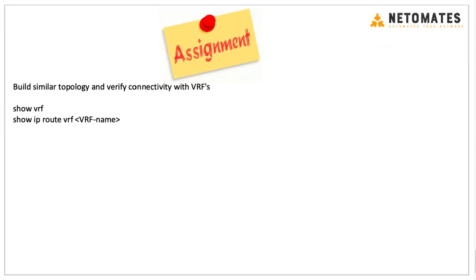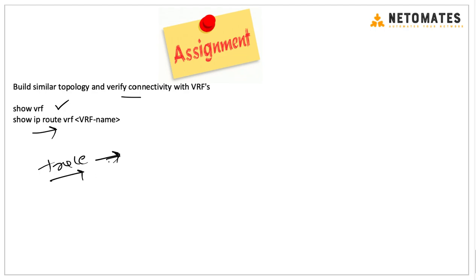Build a similar topology and verify connectivity with VRFs. You can build two or three VRFs and verify configuration with the 'show vrf' command, check the routing table with 'show ip route vrf', and use trace to see the path from one PC in one VRF location to another PC in the same VRF at a different location. Using trace, you can verify that traffic is not crossing into a different customer's environment. That's all for today's class, thank you.